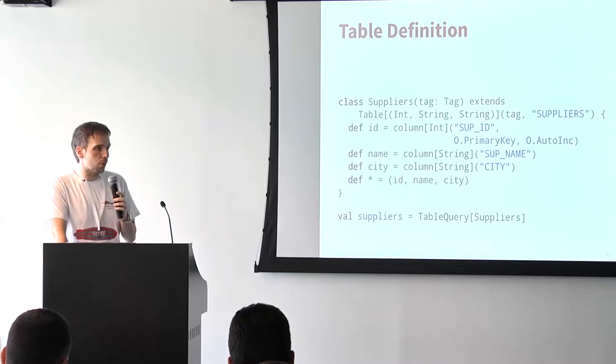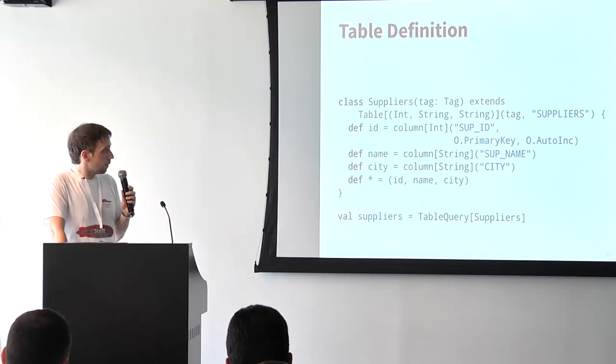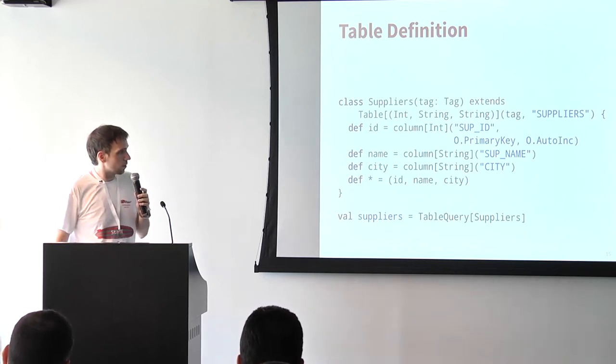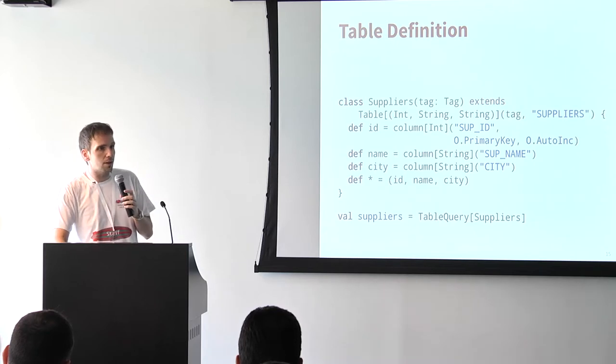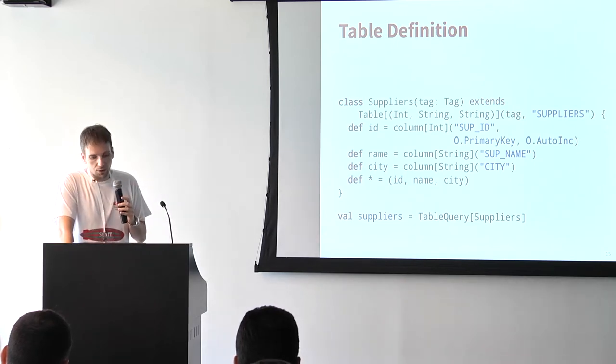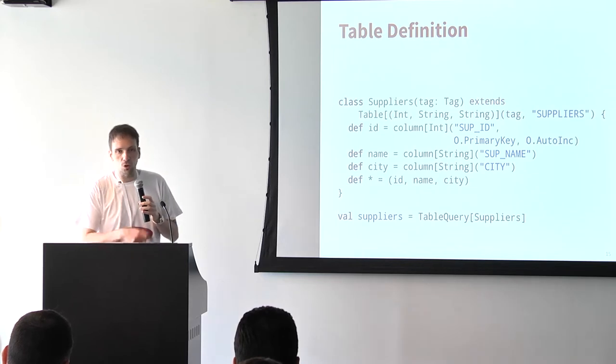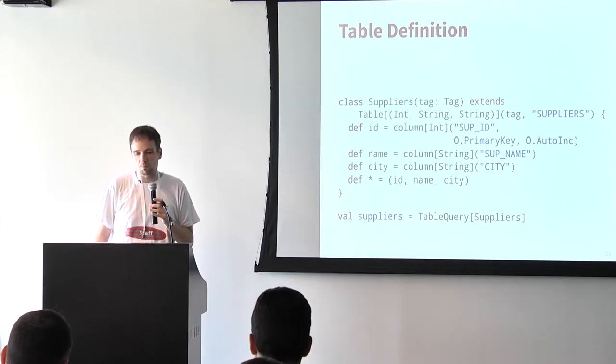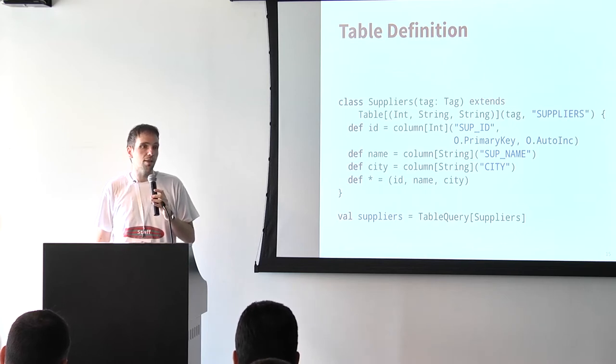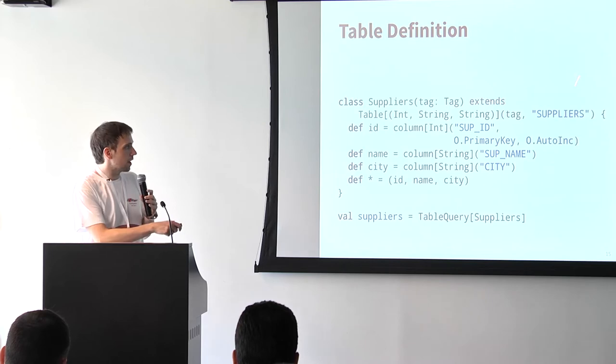Before we can work with data in the database, we have to define the tables for Slick. Since it's all statically checked by the Scala compiler, we need class definitions to give it the proper types. You now have to define both a class and a value — the class just takes a tag that you pass on. The class represents the table row: you give it your table name, then just have `def`s which call `column` of whatever data type for the individual columns. You can pass additional parameters — here we're saying this is the primary key column and we want the database to auto-increment it.